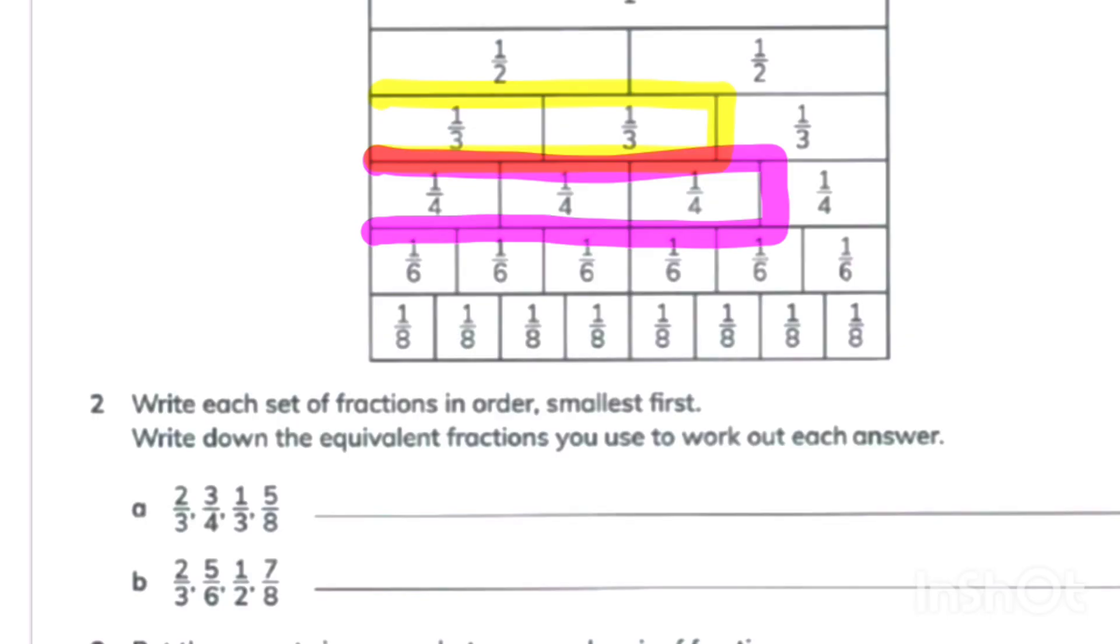In part 1 it says 2 thirds. So I collect 2 one thirds. Then it says 3 fourths. So I collect 3 one fourths. Then it says 1 third again. So I collect 1 third only. And then it says 5 eighths. So I collected 5 parts out of 8 parts. You can easily arrange from the smallest. 1 third is looking smallest. After that 5 eighths is bigger than 1 third. Then 2 thirds. Then 3 fourths is the biggest one.